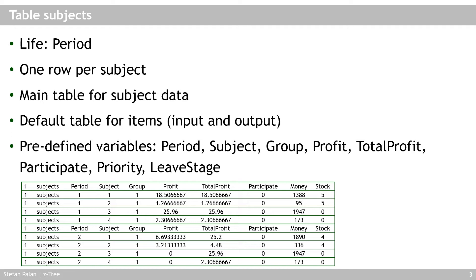The subjects table is also the default table for items. If you put a variable in an item's display or in the text layout field, Z3 first looks for that variable in the subjects table. Many predefined tables have predefined variables — for example, the period variable is present in most tables. The subject variable is specific to this table and tells you the subject number. The group variable assigns all subjects in one group the same group number.